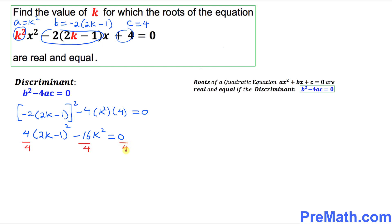That's going to make our life a lot easier. So once you do this, we simply got (2k-1)² - 4k² = 0.